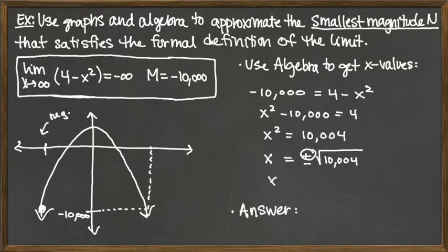And so when we use our calculator to approximate this using the positive root, what we end up getting there would be approximately 100.019998, keeping several places. And so that is the value of N that we're looking at here. So we've got N is equal to 100.019998.